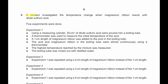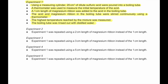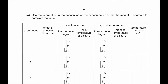Question number 2. A student investigated the temperature change when magnesium reacts with dilute sulfuric acid. Five experiments were done. Using a measuring cylinder, 20 cm³ of dilute sulfuric acid were poured into a boiling tube. A thermometer measured the initial temperature, then a length of magnesium ribbon was added and the mixture stirred continuously. The highest temperature reached was measured. The experiments were repeated with 1, 2, 3, 5, and 6 cm lengths of magnesium ribbon.